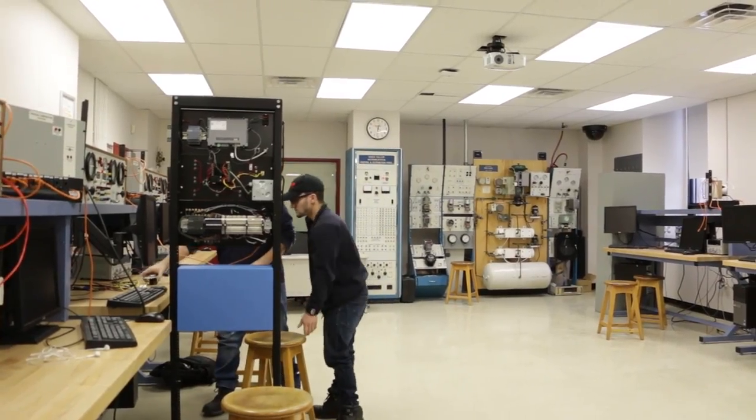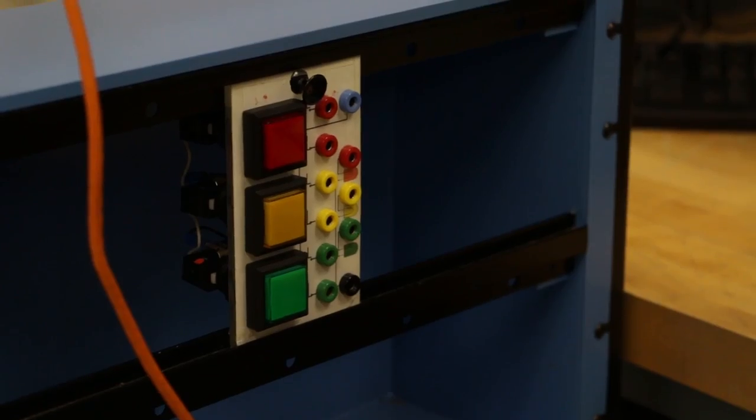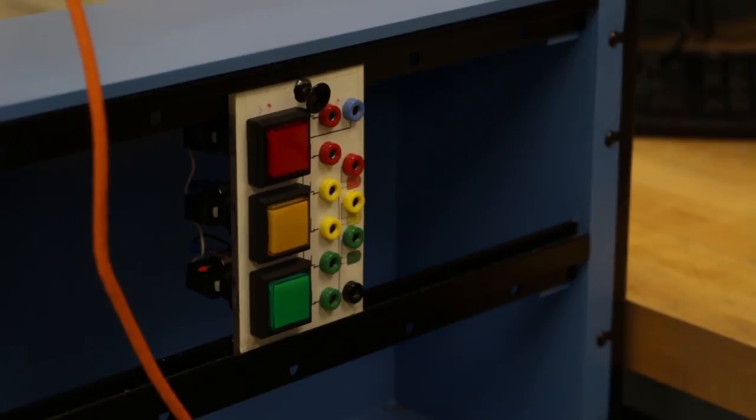We're in the automation lab and today we're working with PLCs and we're trying to configure them right now with the computer. How it works is that you build a ladder logic and then you upload that ladder logic onto the PLC that can do functions like for example a traffic light or things like that in your everyday life.